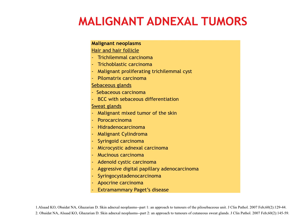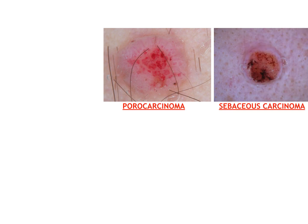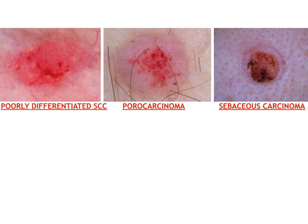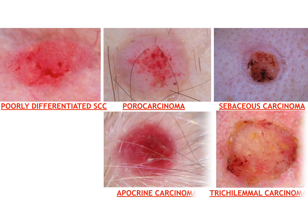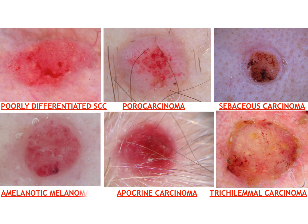Malignant adnexal tumors, as well as the benign ones, are very numerous. Regarding the dermoscopic aspect of these skin tumors, it is actually indistinguishable from that of a poorly differentiated SCC or an amelanotic melanoma. For example, the dermoscopy of this porocarcinoma and sebaceous carcinoma resembles undifferentiated SCC, while this hidradenocarcinoma or this tricholemmal carcinoma are dermoscopically similar to amelanotic melanoma.